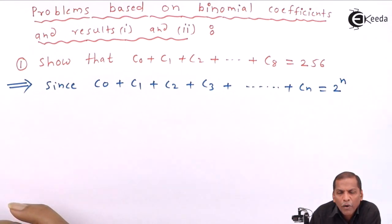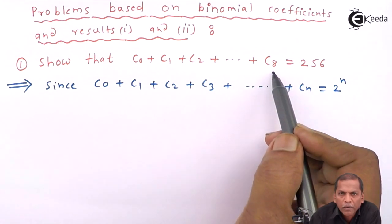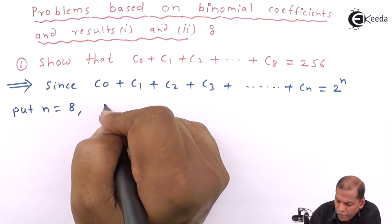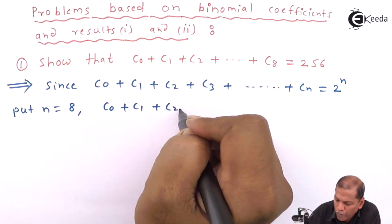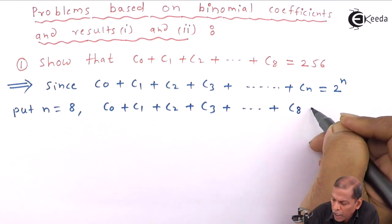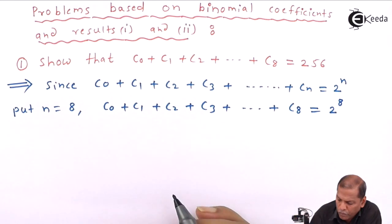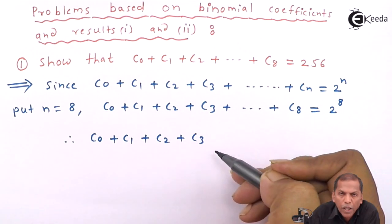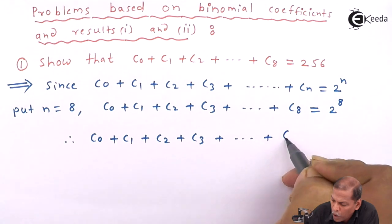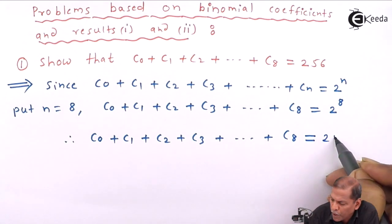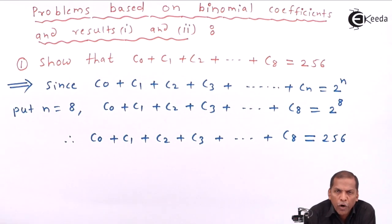In this formula we put n equal to 8, since in the question the last term is c8. So putting n equal to 8, we get c0 plus c1 plus c2 plus c3 going on up to plus c8 equals 2 raised to 8, which gives 256. So this is the required solution for the given problem.